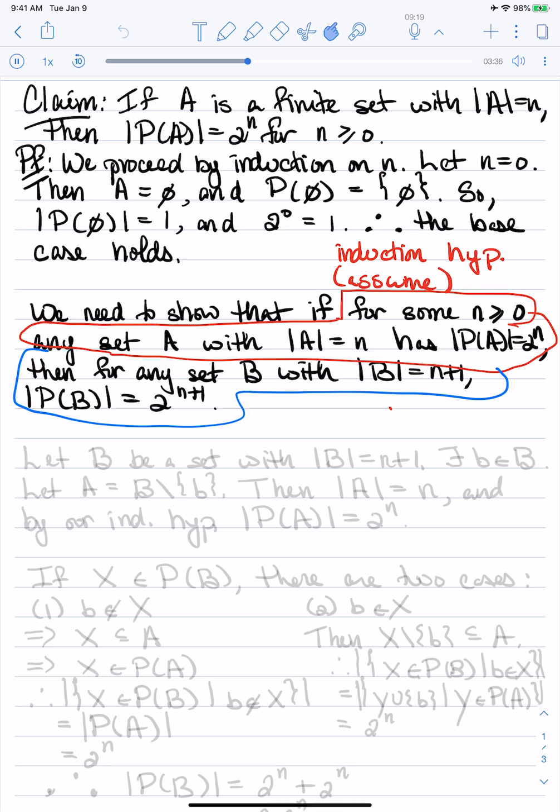So let's start by considering a set of the form with n plus 1 elements. Let B be a set with size n plus 1. Since it has size n plus 1, it's not empty, so there exists an element b in B.